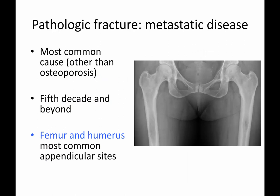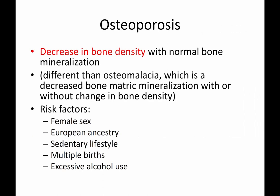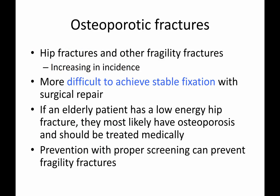Metastatic disease is the most common type of pathologic fracture, occurring usually in older patients, with the femur and humerus being very common appendicular sites. Osteoporosis is a decrease in bone density with normal bone mineralization, which differs from osteomalacia or vitamin D deficiency. Risk factors for osteoporosis are important to recognize, as they can lead to fragility fractures such as hip fractures, which are increasing in incidence. Because the bone is thin, achieving stable fixation can be difficult and may require specialized techniques.